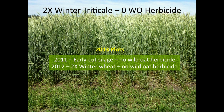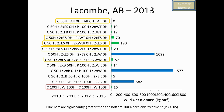Here's a similar plot—2x seeding rate of winter triticale without herbicide, three years running. The first year was early-cut silage, the second year was 2x seeding rate of winter wheat, and we had almost complete control of wild oat. Looking at the four years of treatment data, the canola-wheat rotation with 100% herbicide is the benchmark. Any bars significantly greater than that are highlighted, and you can see several treatments without any wild oat herbicides three years running that did as well—early silage, winter wheat, and winter triticale all at double seeding rates.